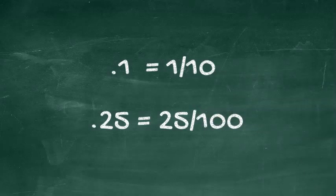But if you say 1 tenth and 25 hundredths, then you have already solved it. That's because if you know your fractions, you know that 1 tenth looks like this, 1 over 10, and 25 hundredths looks like this, 25 over 100.